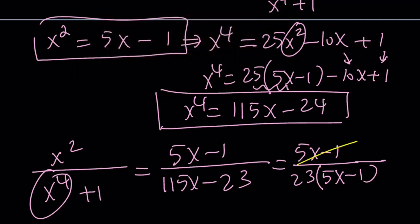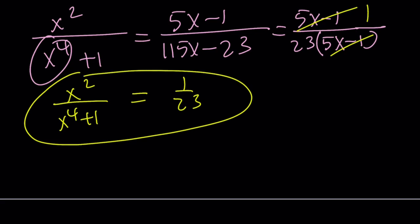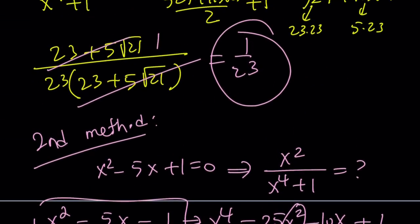And now we can write this as 5x minus 1. 5x minus 1 cancels out, leaving us with 1 over 23 as the answer, right? So based on the given, this quantity equals 1 over 23 as we found out before.